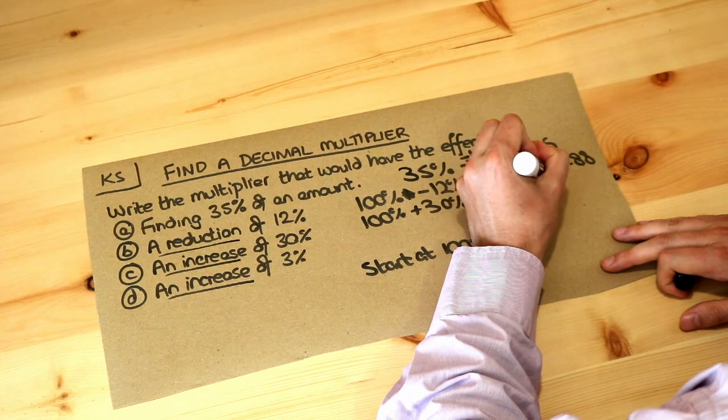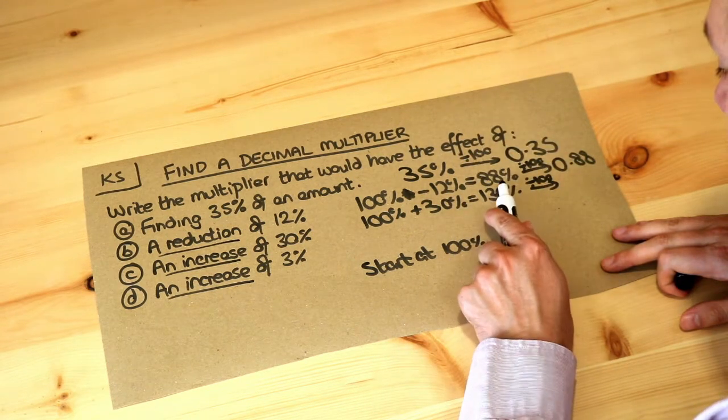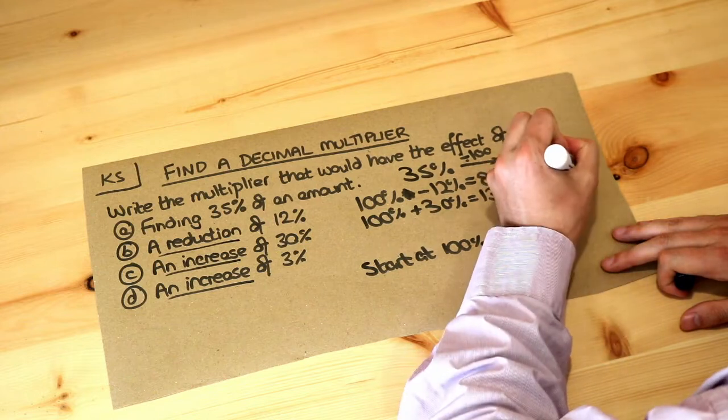So you divide that by 100 again, and the decimal point moves two places, it's going to be between the 1 and the 3. 1.3. We don't need the 0 on the end.